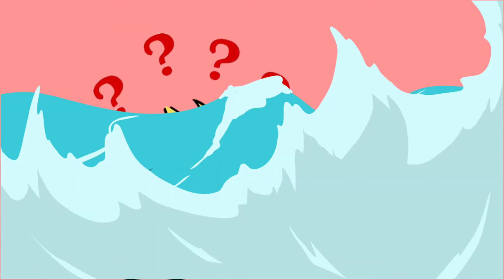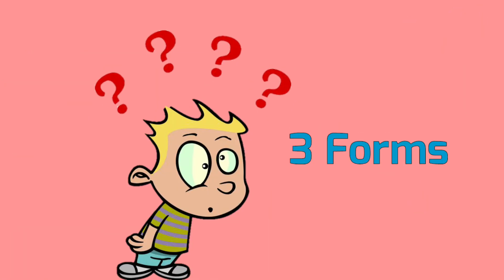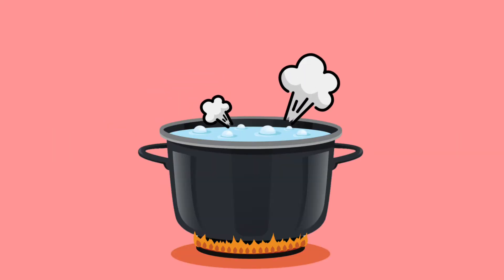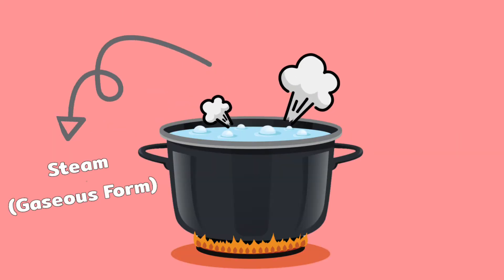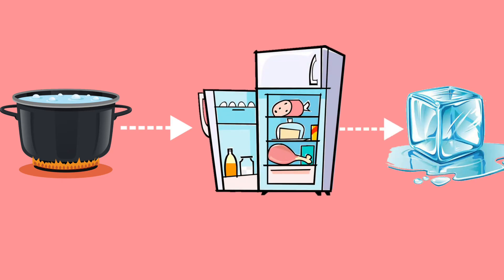Do you know that water exists in three forms? When it boils, it forms steam — that is the gaseous form. When water is kept in a freezer, it turns into ice — that is the solid form.